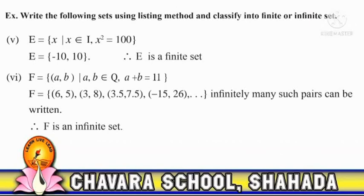Fifth: E is the set of all x such that x belongs to integers and x² = 100. Therefore E = {−10, +10}. Here, E is a finite set.